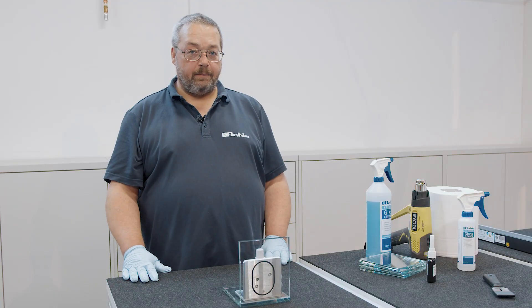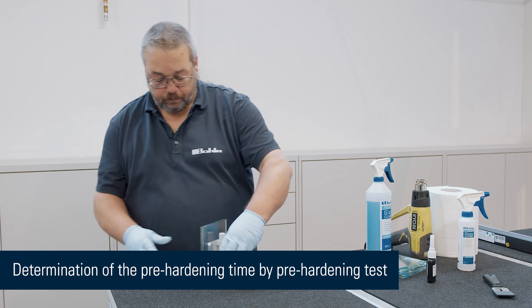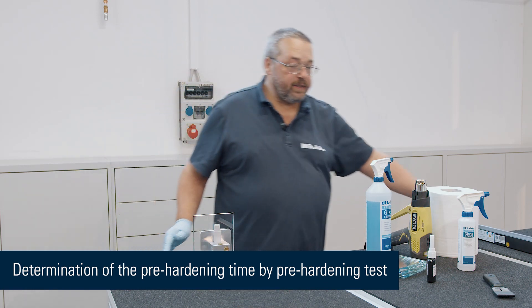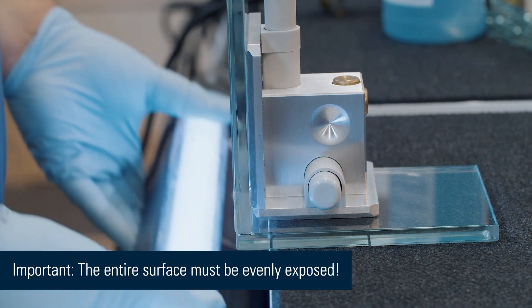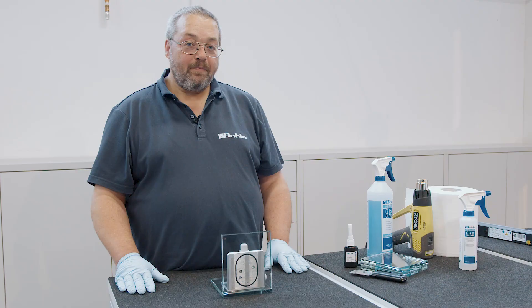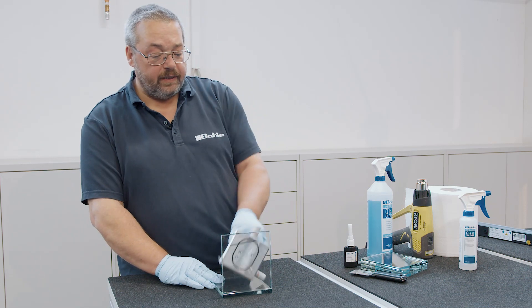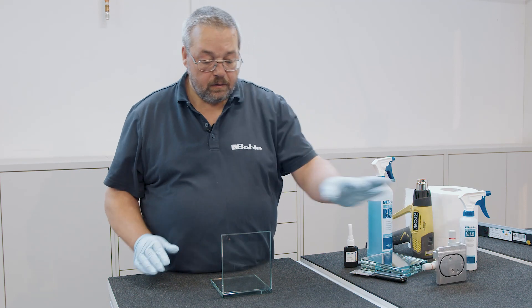When we have applied a sufficient amount of adhesive, we can pre-cure the adhesive layer. Here our UV lamp comes into play and is placed closely onto the glass surfaces from below. When pre-curing is finished, we can remove the fixing aid and you'll see that both our parts stick together.